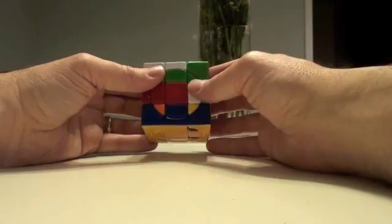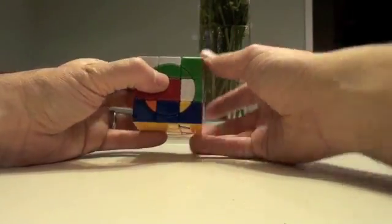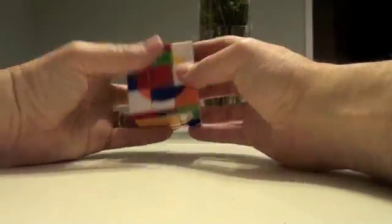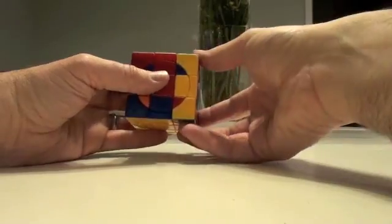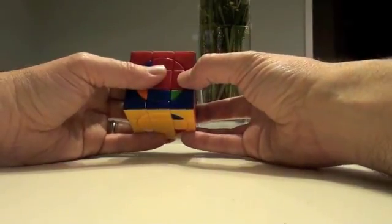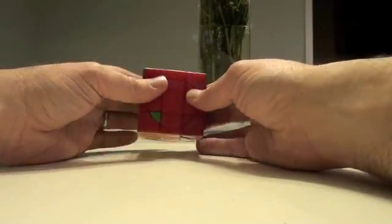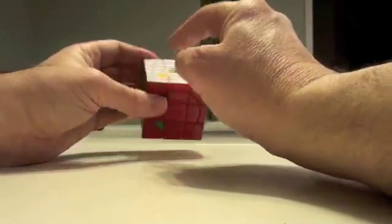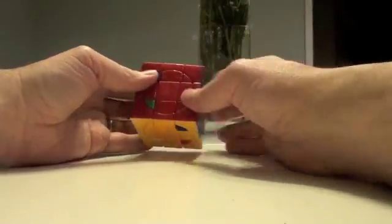And then you swing it back to bring this over here by doing the next part of the algorithm, which is Ri, F, R, Fi, R, U, and then Ri. And then you have to be sure to move it back where it was. So you can see the overall effect is we moved this to here, this to here, and this to here. So we've got this in place.